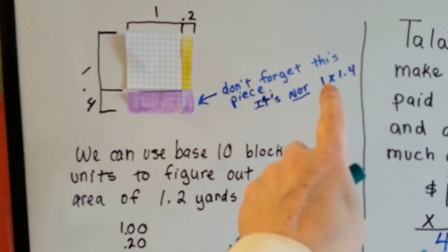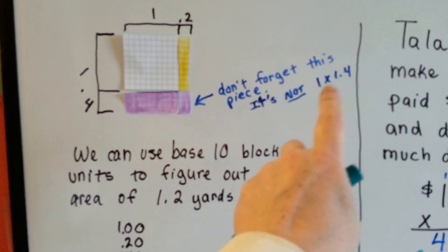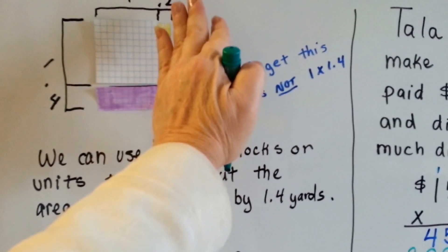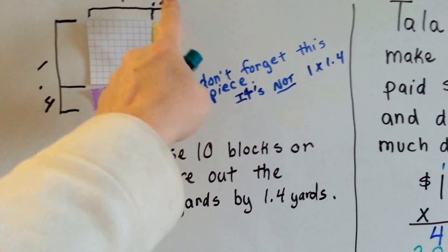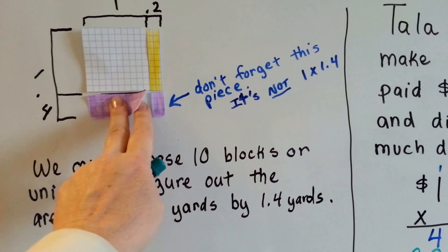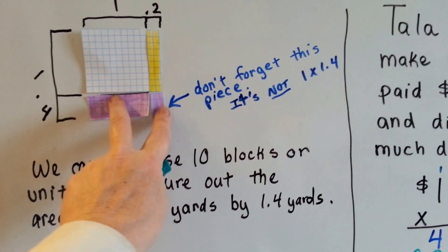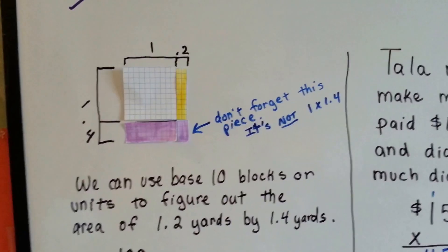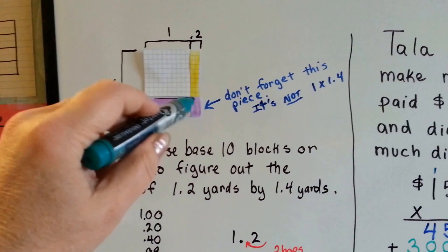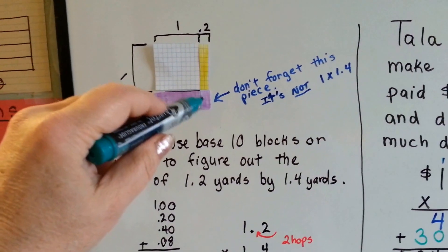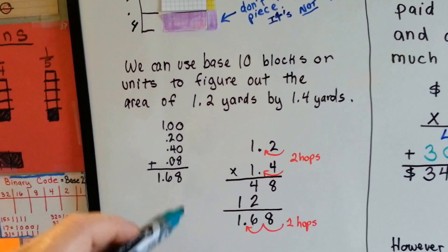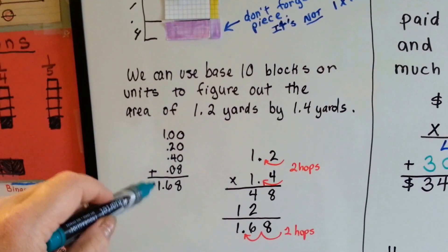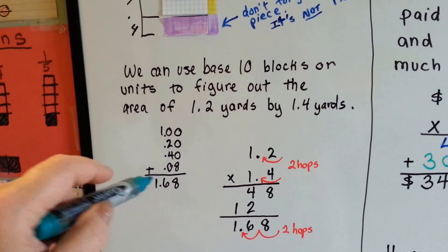But because we're not multiplying 1.4 times 1 — then we would be like this — we're multiplying it by 0.2, so we actually need these little pieces of 8 right here tacked onto the end. So make sure, if you do this with models, that you tack on your little piece on the end. Now we can add the 100, the 20, the 40, and the 8, and we get 168.